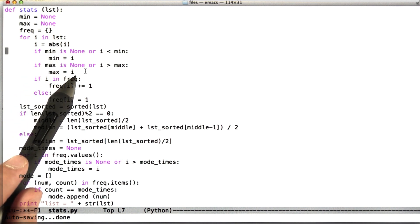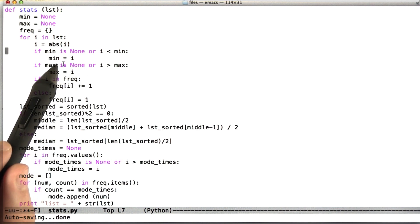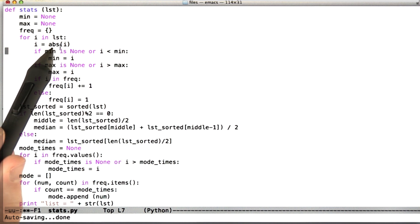To get good boundary value coverage on this function, we would have been forced to call it with a list containing at least one negative number, and we most likely in that case would have discovered the bug.